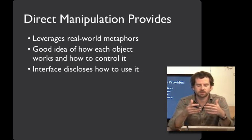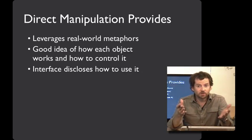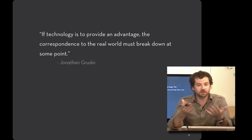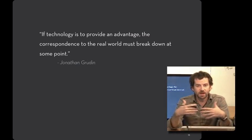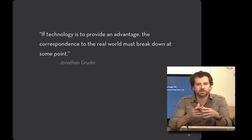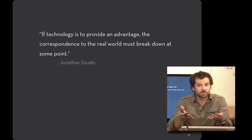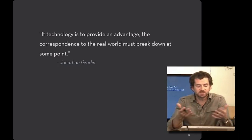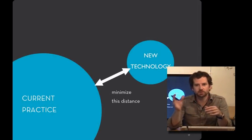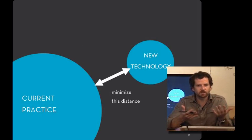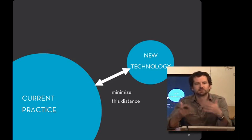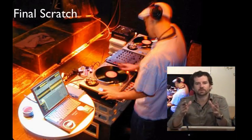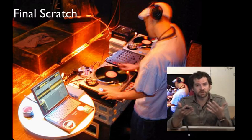Here's the challenge: the reason we have technology and software is that we want to be able to do something new. The reason we have a digital slider instead of a physical slider is that somewhere in the system there's new functionality being offered. As Jonathan Gruden points out, if technology is providing an advantage — if there is new functionality — at some point the correspondence to the real world has to break down. This gap between new technology and current practice is necessarily going to be there, but your goal as a designer is to minimize this distance as much as possible.